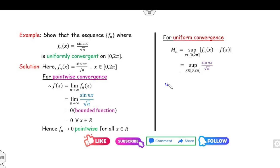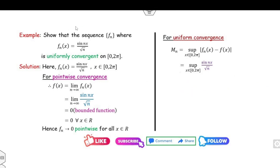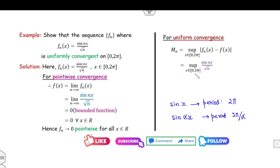For uniform convergence, find MN = sup_{x∈[0,2π]} |sin(nx)/√n − 0| = sup |sin(nx)|/√n. The maximum value of |sin(nx)| is 1, achieved when nx = π/2, i.e., at x = π/(2n). This point x = π/(2n) lies within [0, 2π] for all positive n.